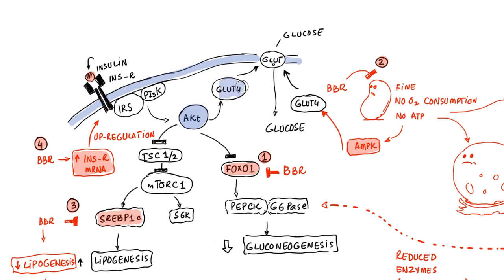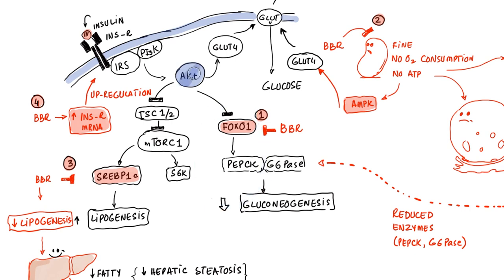AKT does the following: it causes glucose receptors — which are usually sequestered in a vesicle inside the cell — to be brought to the cell surface. We call these GLUT4 receptors. When GLUT4 is attached to the cell surface, it triggers glucose to be brought into the cell. This is one of the key functions of insulin: to trigger glucose uptake by increasing glucose receptors on the cell surface.